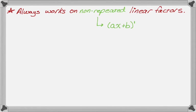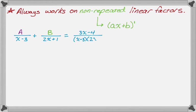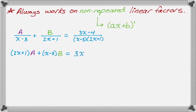Let's take a look at a normal partial fraction decomposition. I've already gotten it to the stage where you would start solving for the unknowns. So I have A over x minus 3 plus B over 2x plus 1 is equal to 3x minus 4 over the quantity (x minus 3) times the quantity (2x plus 1). Remember that the denominator always needs to be in factored form. I'm going to clear out the denominator by multiplying through by the common denominator.